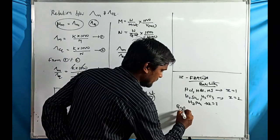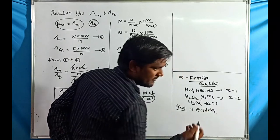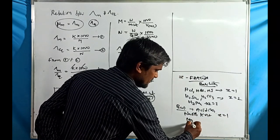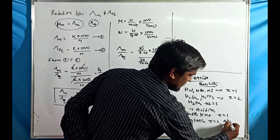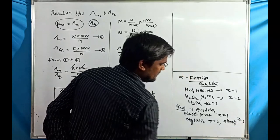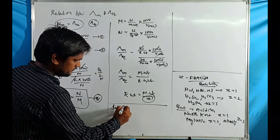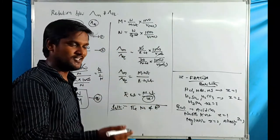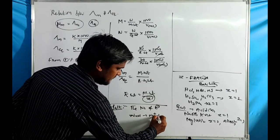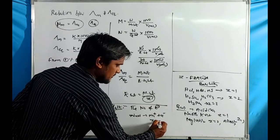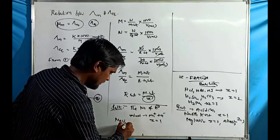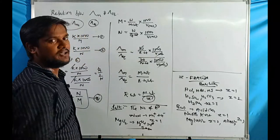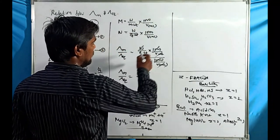For bases, z is the acidity — the number of OH⁻ ions transferred. For NaOH or KOH: z = 1. For Mg(OH)₂: z = 2. For Al(OH)₃: z = 3. For salts, z is the highest charge on the ion. For NaCl (Na⁺ and Cl⁻): z = 1. For MgCl₂ (Mg²⁺ and 2Cl⁻): z = 2.